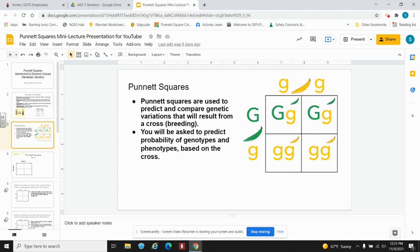Today we will learn how to use Punnett squares to predict one trait in an offspring in a monohybrid cross of parents and two traits in an offspring in a dihybrid cross of two parents. You'll be asked to predict the probability of genotypes and phenotypes based on the cross.